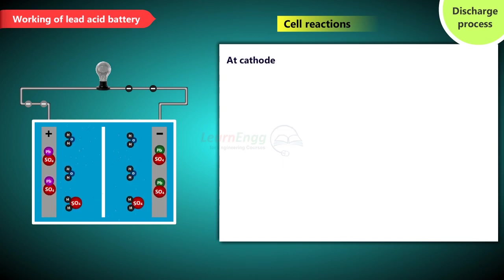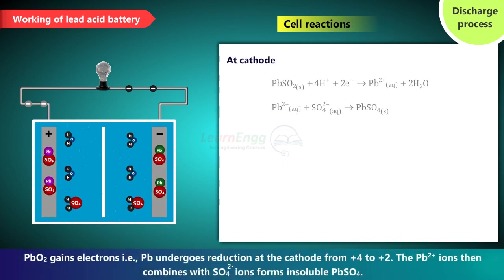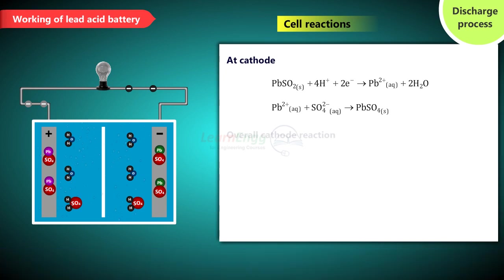At cathode reaction. At cathode PbO2 gains electrons that is Pb undergoes reduction at the cathode from +4 to +2. The Pb2+ ions then combines with SO4 2- forms insoluble PbSO4. Overall cathode reaction.